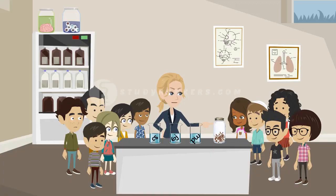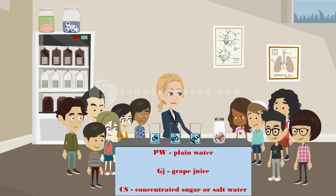So students, we have some dried raisins with us. We will perform the process of osmosis. Seriously ma'am, with raisins? Yes, Richa, with raisins, because the concentration of a solute in a solution will affect the movement of water in and out of grapes. So students, let's start with our experiment. We have different solutions as labeled on the beakers: plain water, grape juice, and concentrated sugar or salt water.